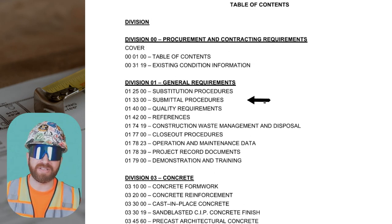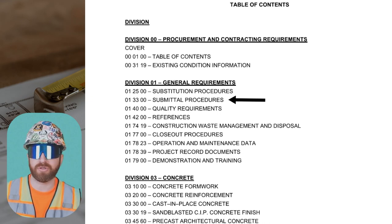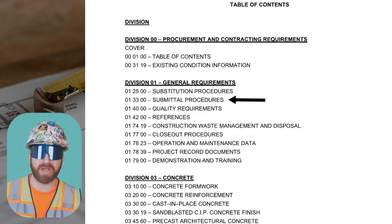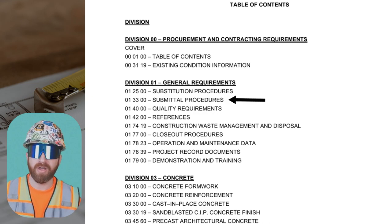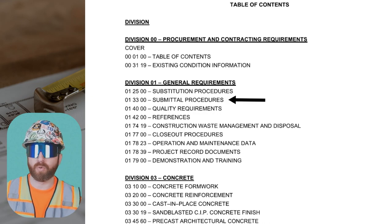Start off by reading the submittal procedures specification section. This should have defined terminology you'll see throughout the spec book. This could include action submittals versus information submittals — action submittals being those you provide to the architect and engineer for their review, versus information submittals that are submitted for record or for the owner at the end of the project.